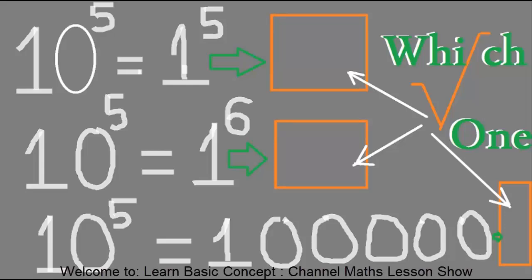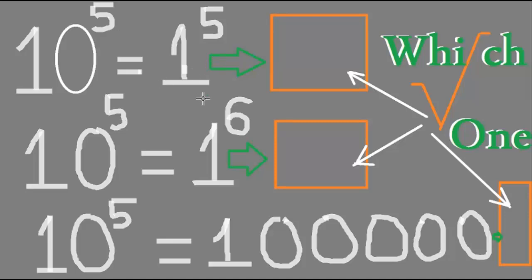Hello, happy to see you again. Today we show you about mathematics problem solving. You can see about 10 to the 5 equal 1.5. In this box you can answer two or four. This one is 10 square 5 equal 1, and the final 10 to the 5 equal 1, 0, 0.